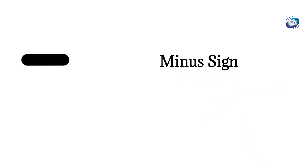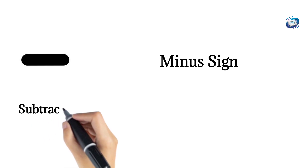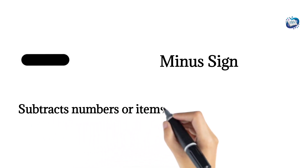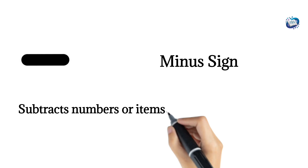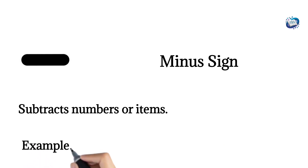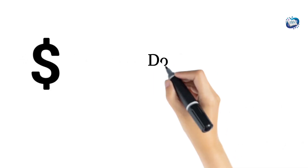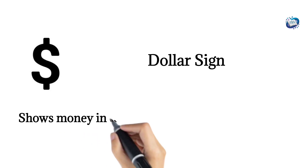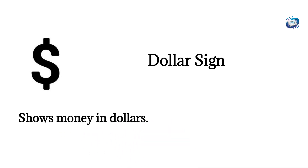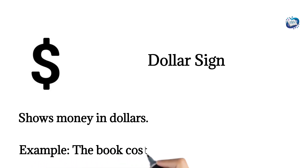Minus sign. Subtracts numbers or items. Example: 10 − 3 = 7. Dollar sign. Shows money in dollars. Example: the book costs $10.